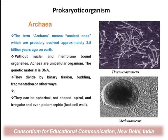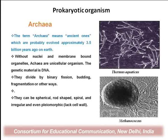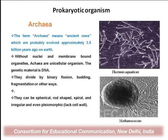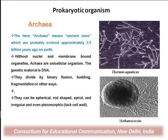Archaea are prokaryotic organisms — the ancient ones — which originated first on Earth about 3.5 billion years ago. Without nuclei and membrane-bound organelles, archaea are single-cell organisms whose genetic material is DNA. They divide by binary fission, budding, and fragmentation. They can be spherical, rod-shaped, spiral, irregular, or pleomorphic — meaning they may have no cell wall. In this slide, you can see Thermus aquaticus and Methanococcus archaea.